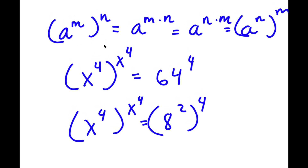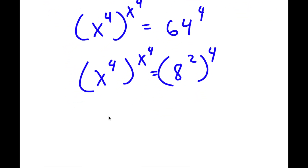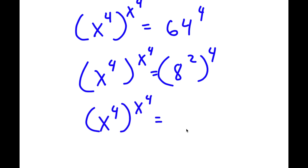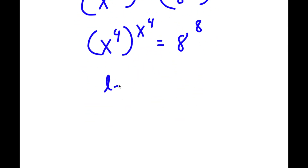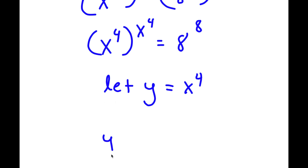Remember, if I have a to the power of m to the power of n, this is equal to a to the power of m times n. So 8 to the power of 2 to the power of 4 equals 8 to the power of 2 times 4, which is 8 to the power of 8. So now I have x to the power of 4 to the power of x to the power of 4 is equal to 8 to the power of 8. I'm going to let the variable y equal x to the power of 4, so replacing gives y to the power of y is equal to 8 to the power of 8.